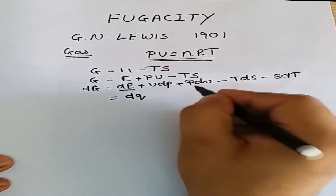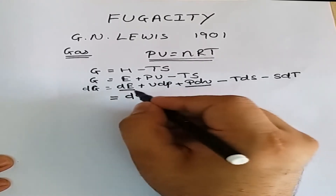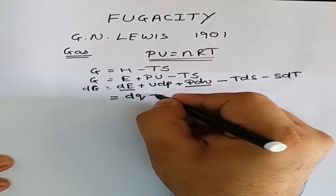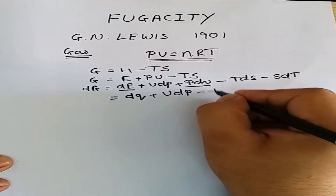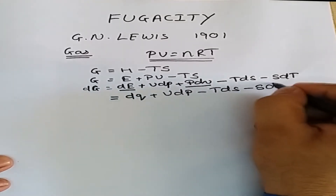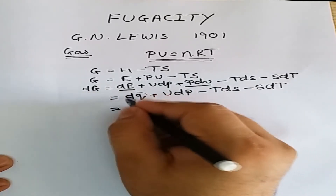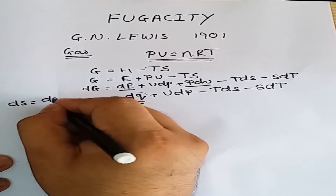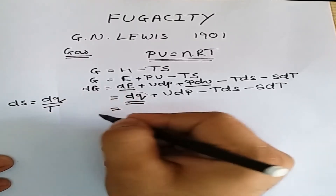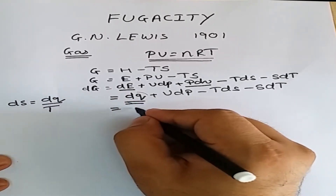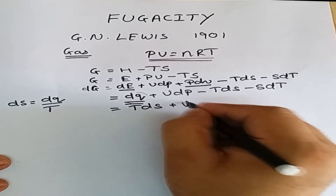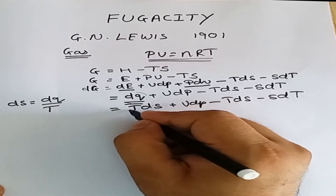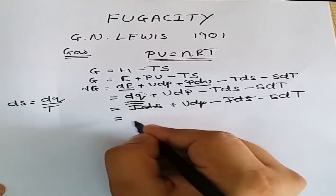Now, dE + PdV can be written as dQ from the first law of thermodynamics. From the second law of thermodynamics, dS = dQ/T, so dQ = TdS. Substituting, the TdS terms cancel out, and we are left with dG = VdP - SdT.